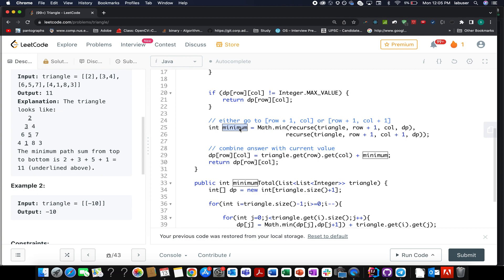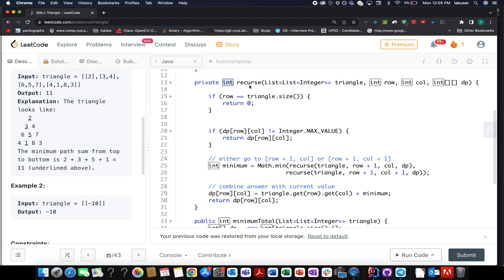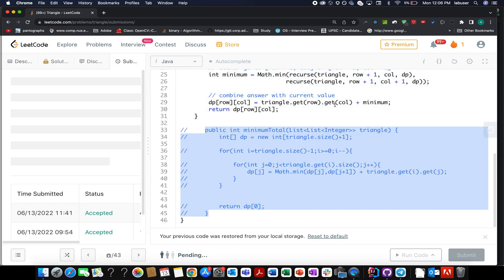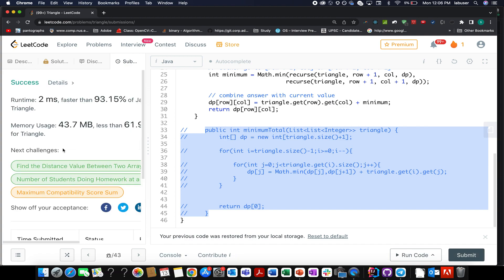Otherwise, I go and identify the minimum of one answer out of recurs of triangle comma row plus one column comma DP and the other possible option is triangle row plus one column plus one comma DP. Whatever value I extract as a minimum one, I add it to the triangle at row comma column index and I have set it to DP of row comma column. I simply return back as an integer that has to be done from this helper method. So let's try this up first. Accepted 93% faster, which is pretty good. And let's walk through the bottom-up approach now.